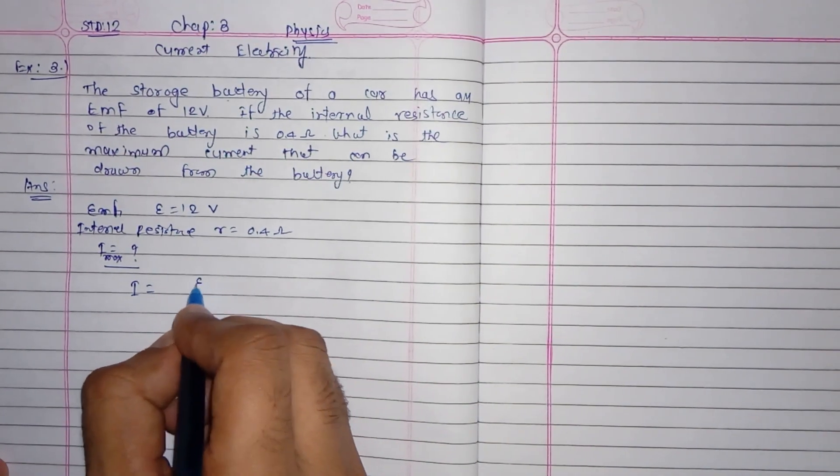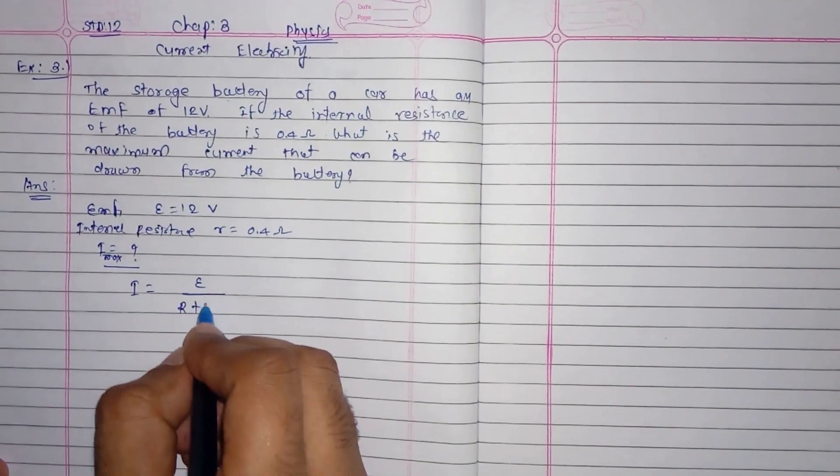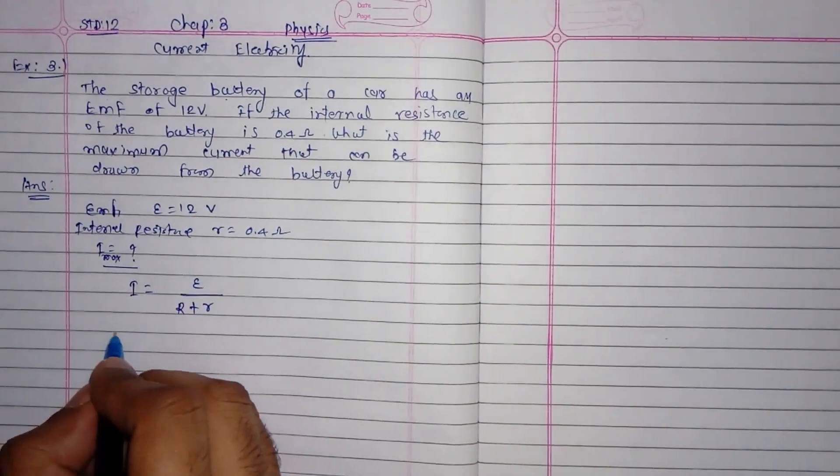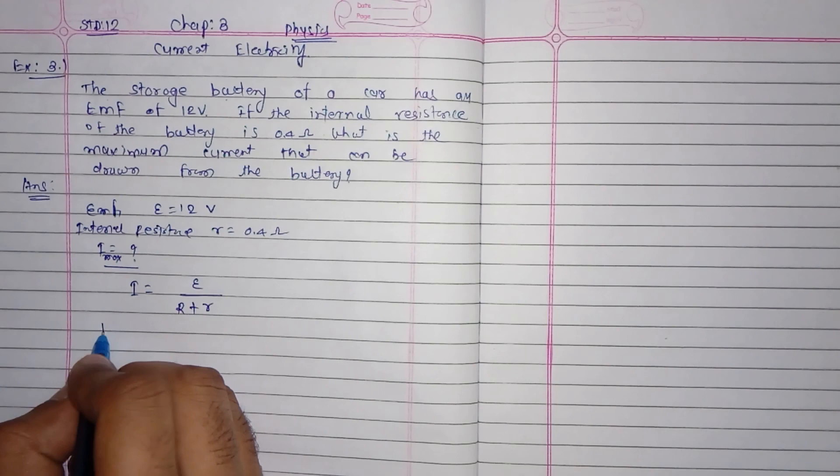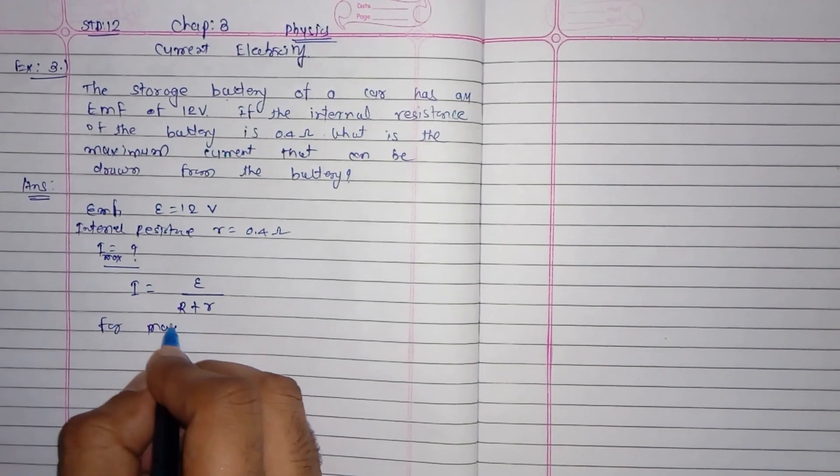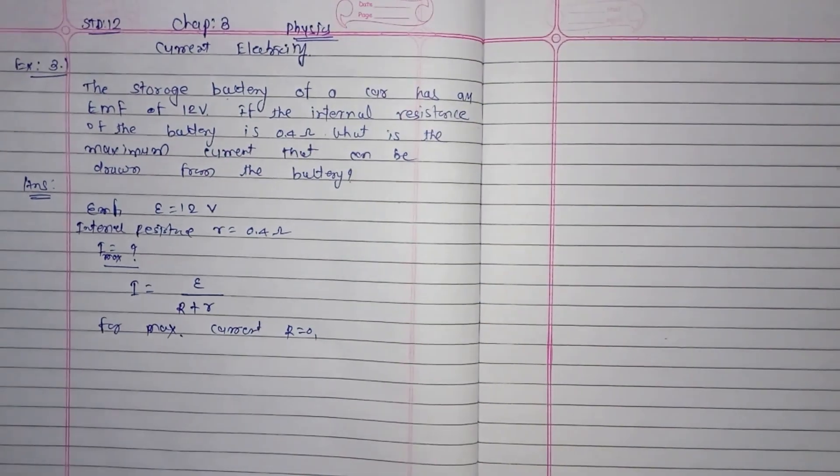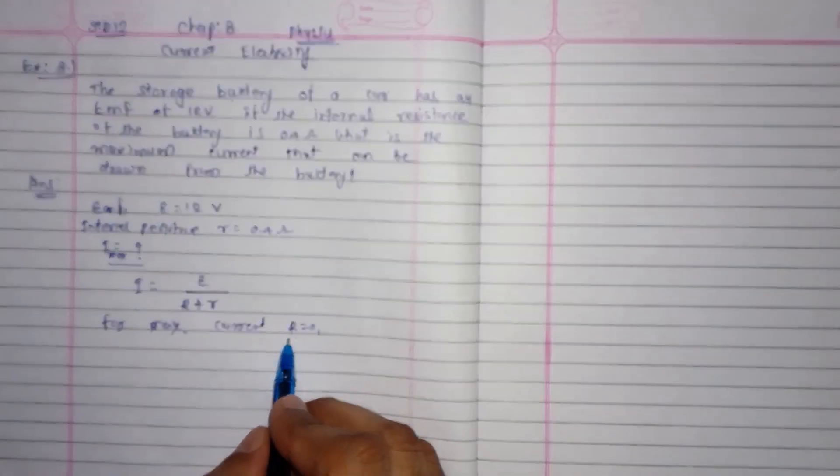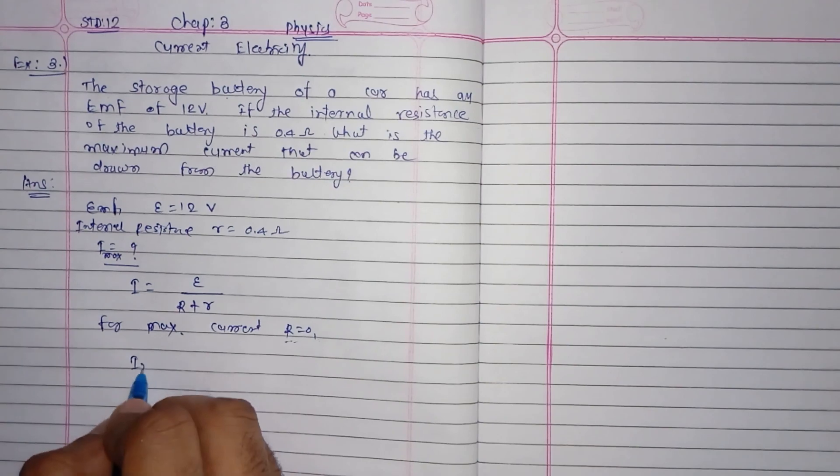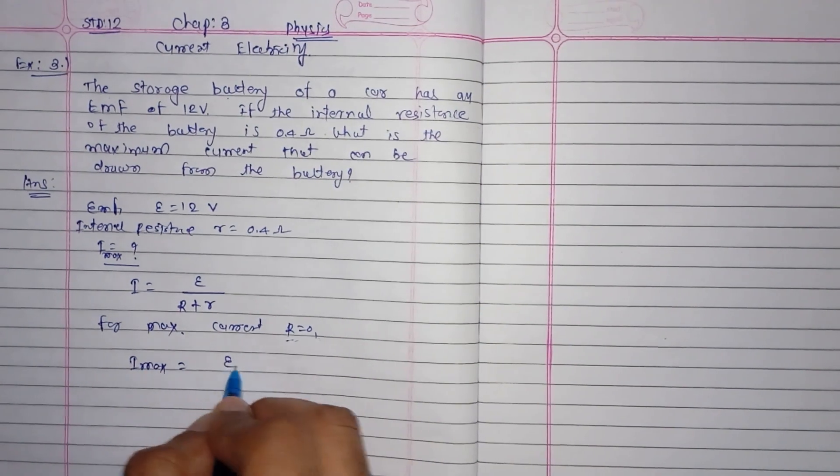As we all know, for maximum current, R is taken as 0. When there is no load, R will be taken as 0, so I max is equal to EMF upon small r.